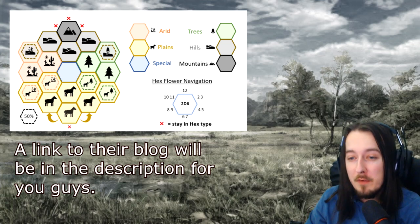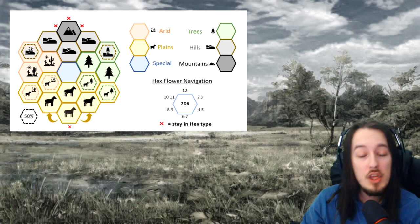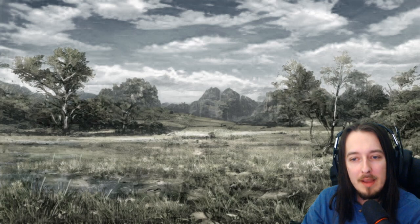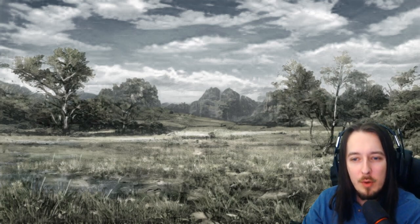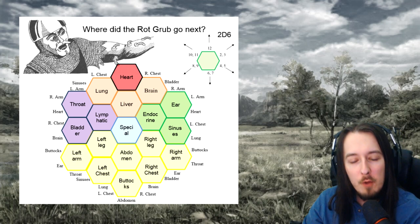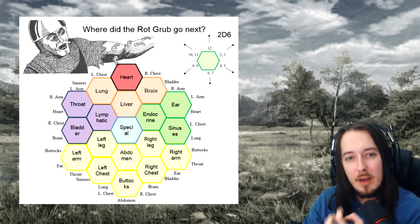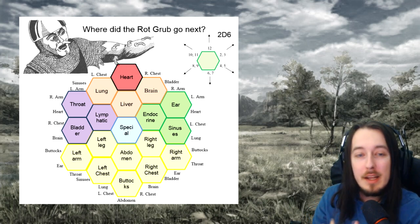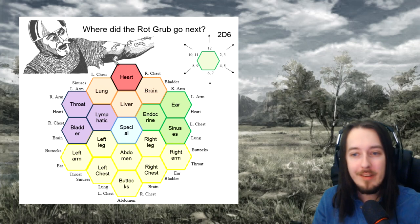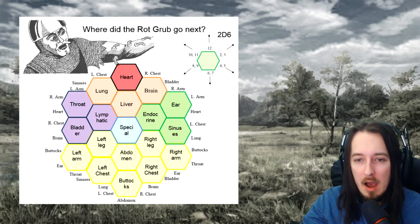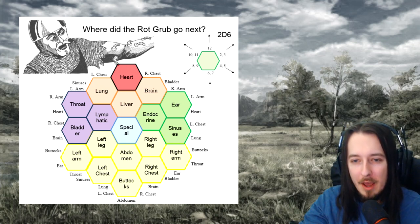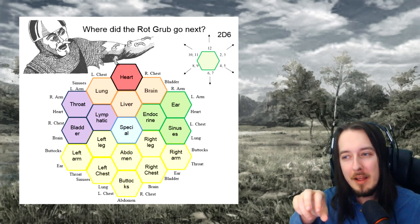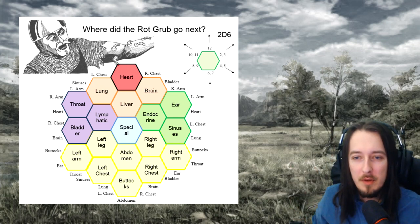And here's a personal favourite of mine, which I'm yet to use in my current campaign, as my players haven't fought against these monsters yet. But it's a Hexflower that shows the movement of rock grubs — these little leech-sized creatures that burrow into your flesh and make their way towards your vital organs. They're terrifying. You can use the Hexflower to direct their movement.